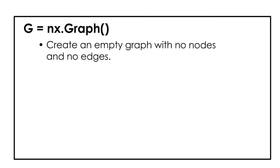Now to go on with brief explanation of codes. G equals NX dot graph. Create an empty graph with no nodes and no edges.